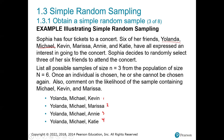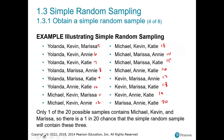The last part asks us to comment on the likelihood of the group being Michael, Kevin, and Marissa. Each trio can only happen one time, so this is only one possible outcome out of my entire 20. Only one of the 20 possible samples contains Michael, Kevin, and Marissa together — so there is a one in 20 chance that the random sample would be that specific group.